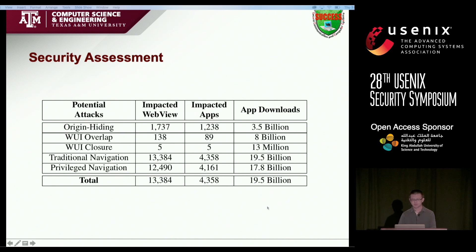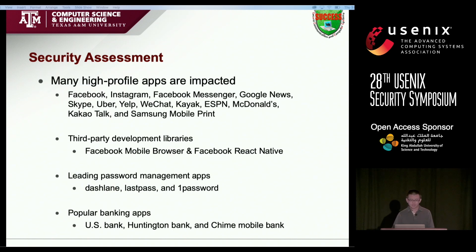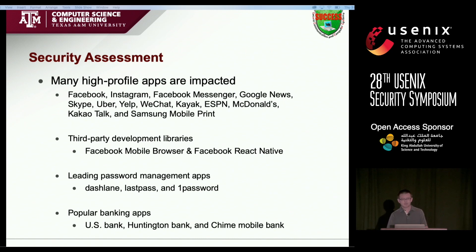We also checked and verified that these potentially vulnerable apps have been downloaded more than 90 billion times. We also verified our tool has a very low false positive rate. The table gives more details about each attack. From this table we can notice navigation attacks impact almost all potentially vulnerable apps, because the conditions for a navigation attack can be easily satisfied. We also manually verified many popular apps. Many of them are impacted, like Facebook, Facebook Messenger, Instagram, Google News, Skype, Uber, and WeChat. Many third-party libraries are also affected, like the Facebook React Native library. More interestingly, we found many leading password management apps and banking apps are also impacted.